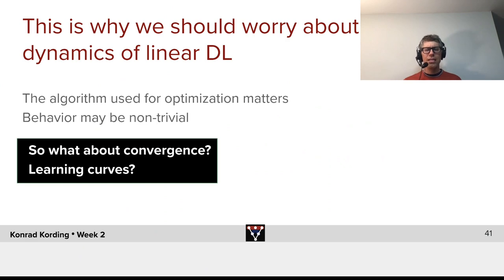So, this is why we should really worry about the dynamics of linear deep learning. The algorithm that we use for optimization matters. Behavior may be non-trivial. So, how does that affect convergence? How do learning curves look in these cases? Why don't you give it a little bit of a try?